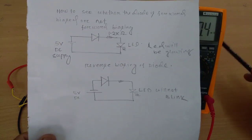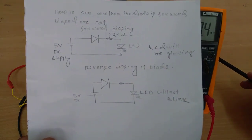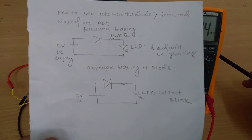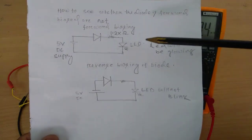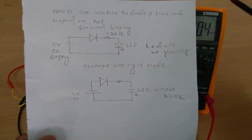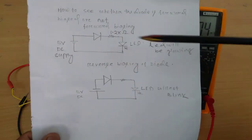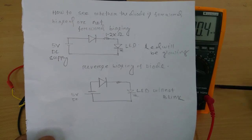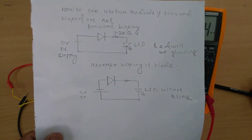I have taken a 5 volt DC supply. So I have taken the diode. If the LED will glow in configuration like this then we can say this diode is in forward biasing condition.